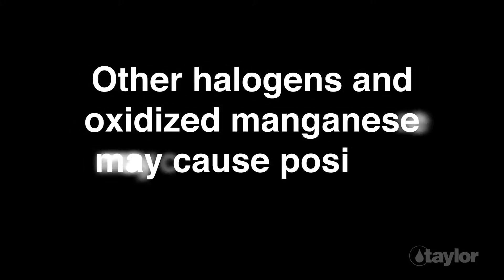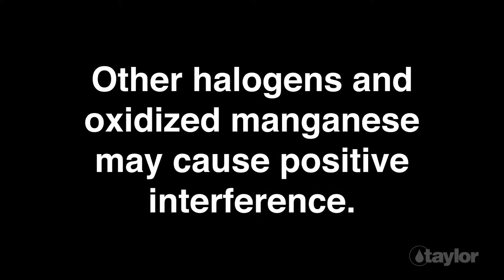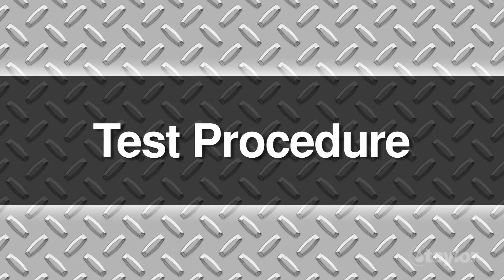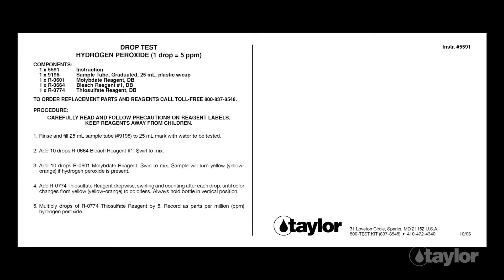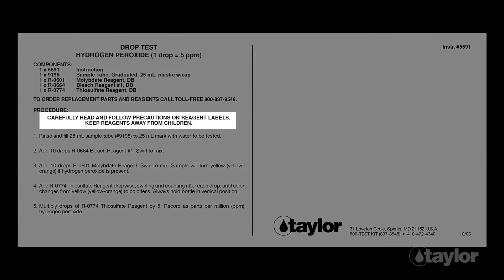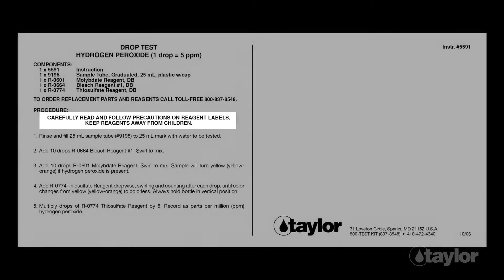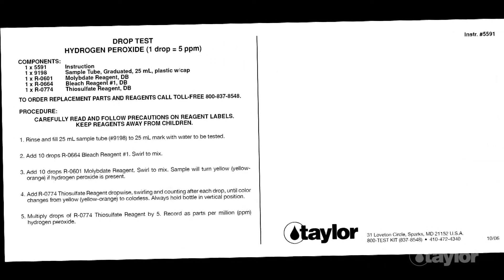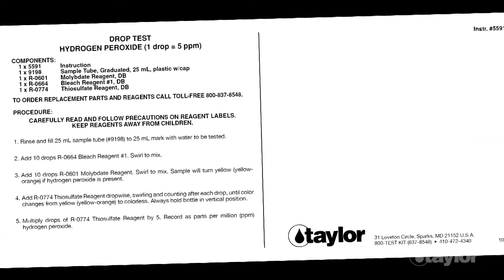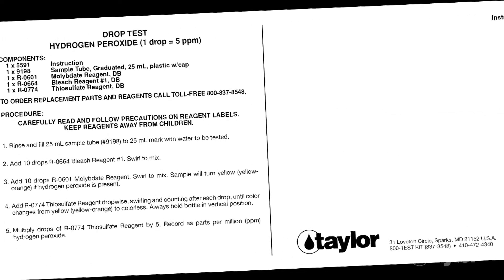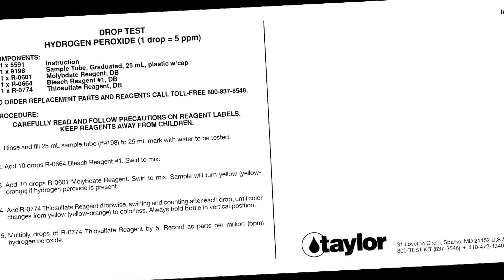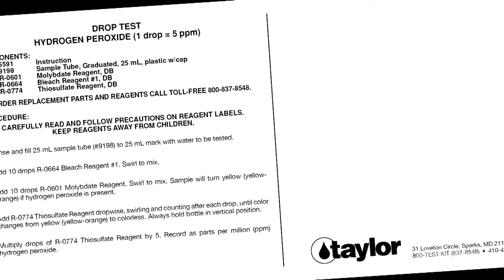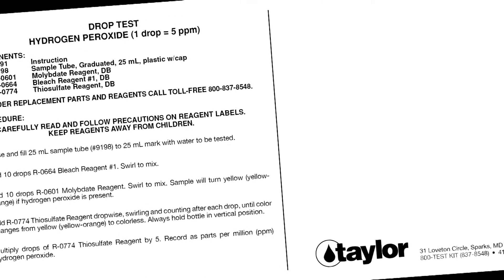Other halogens and oxidized manganese may cause positive interference. Before beginning this or any other Taylor test, it is best to read the instructions through to the end. Familiarizing yourself with all the steps to come is particularly important if the test is new to you or if the kit is newly purchased, as sometimes our procedures change.